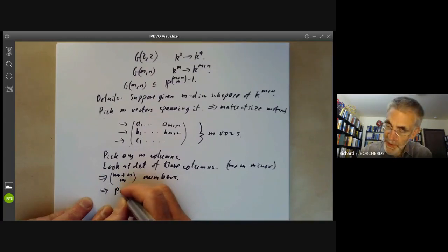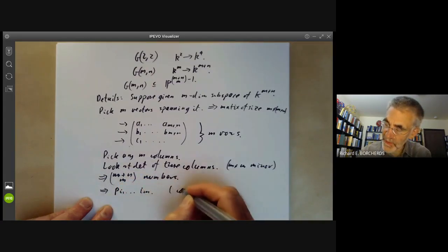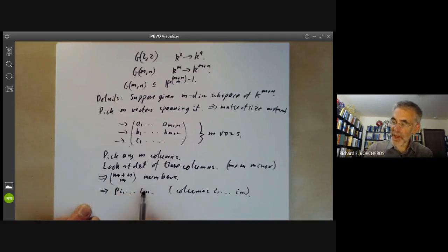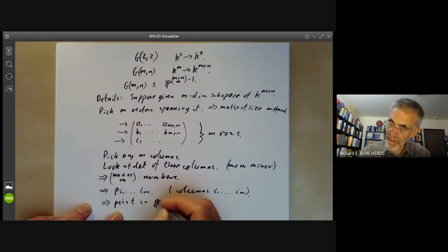And let's call these numbers P_{i1 up to iM}, if we picked columns i1 up to iM. So we've got a large number of numbers P_I, and these give you a point in P^(M+N choose M minus 1).